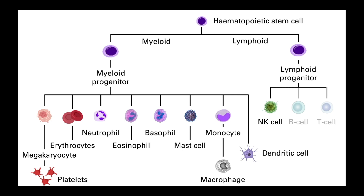Remember, immune cells are derived from hematopoietic stem cells, and in the innate response we are mainly talking about cells that derive from the myeloid lineage of hematopoiesis, with natural killer cells being the exception, coming from the lymphoid lineage.